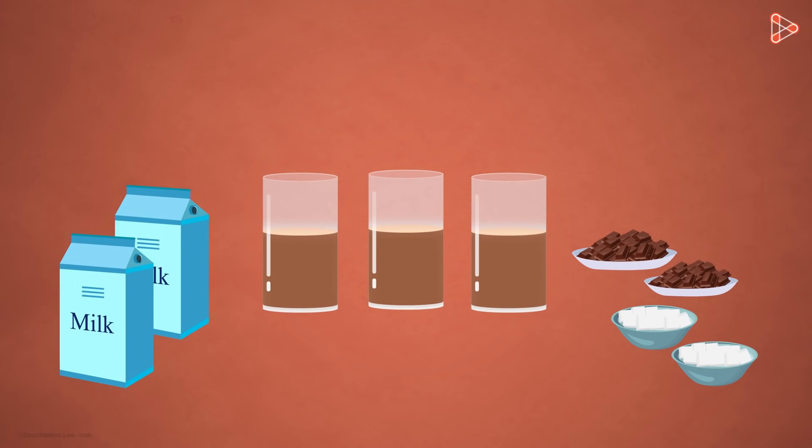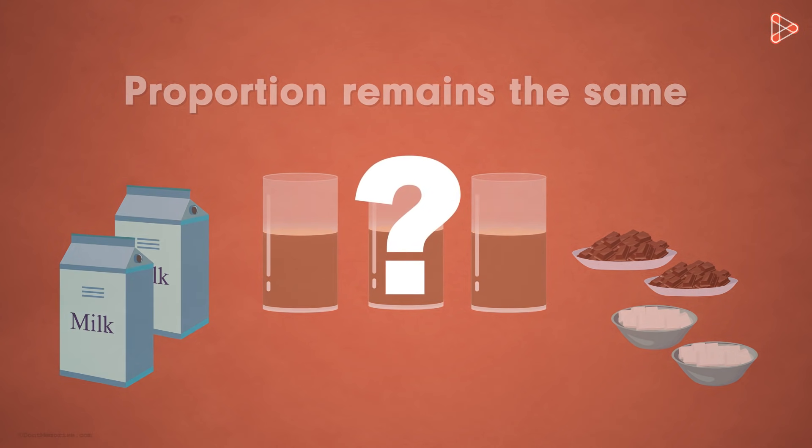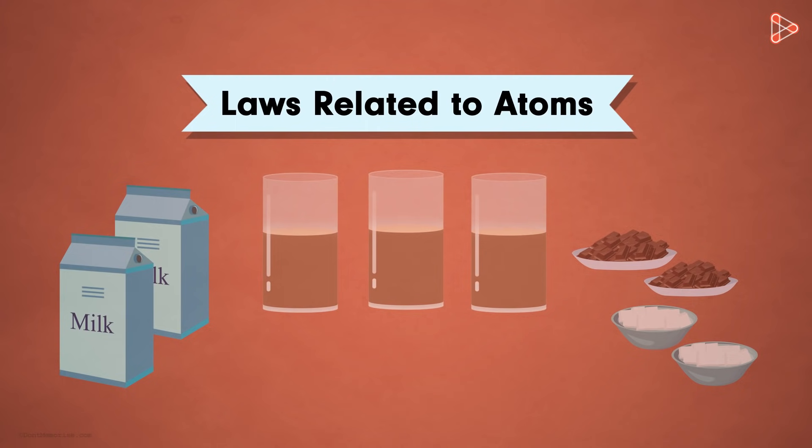It means that for a particular recipe, the proportion of inputs will almost always remain the same. Why are we discussing this along with the concept of atoms? That's because it will help us understand a few important laws related to atoms.